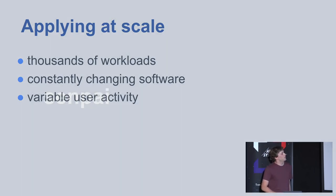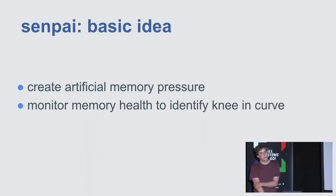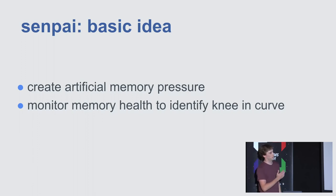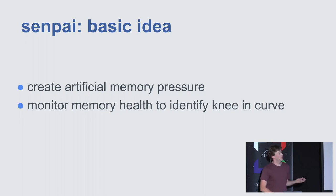This is where Senpai comes in. The basic idea is you create artificial memory pressure on a workload, and then you monitor memory health as it's running to identify where you are on that graph — whether you're cutting off memory that's rarely used, or cutting into the hot set on the left. The question is how do you identify memory health of millions of different applications.